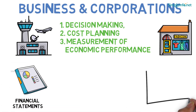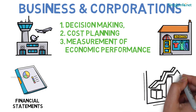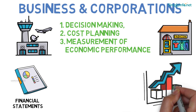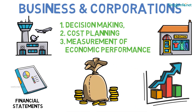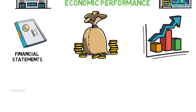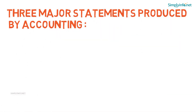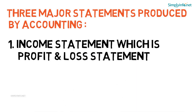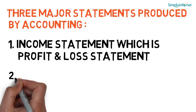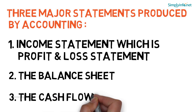The financial statements used in accounting are a precise summary of the financial transactions over an accounting period, which summarizes the company's operations and gives a picture of the financial position and cash flows of the company. The three major statements produced by accounting are the income statement (which is the profit and loss statement), the balance sheet, and the cash flow statement.